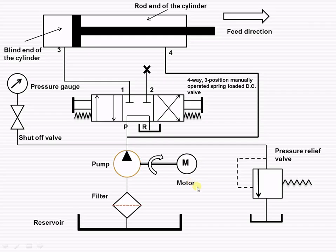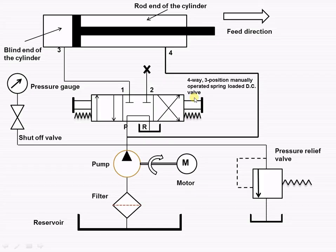Let us try to understand how the hydraulic circuit works. We are taking into consideration the regenerative circuit. The regenerative circuit is used to increase the outstroke speed of the piston of a double acting cylinder. This figure shows a regenerative hydraulic circuit which is used to speed up the operation of the cylinder during its outstroke. It uses a three-position four-way direction control valve with its port blocked, and the lines to both ends of the cylinder are connected in parallel to each other.